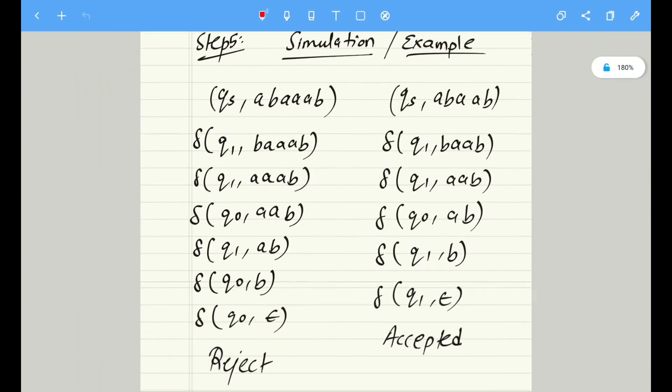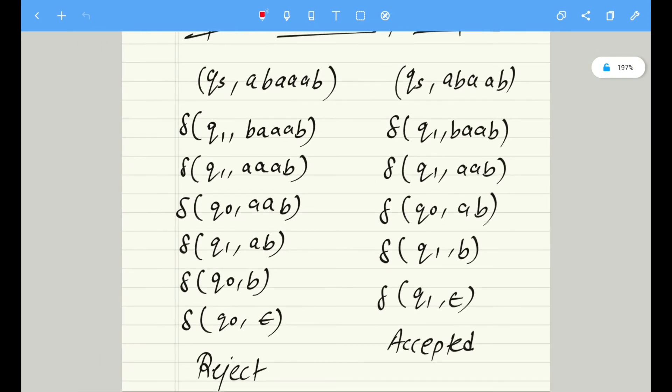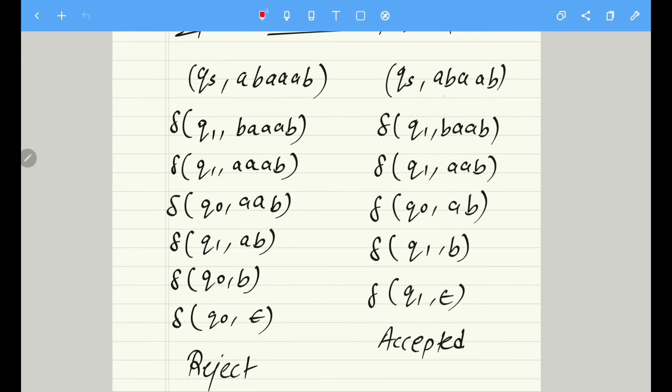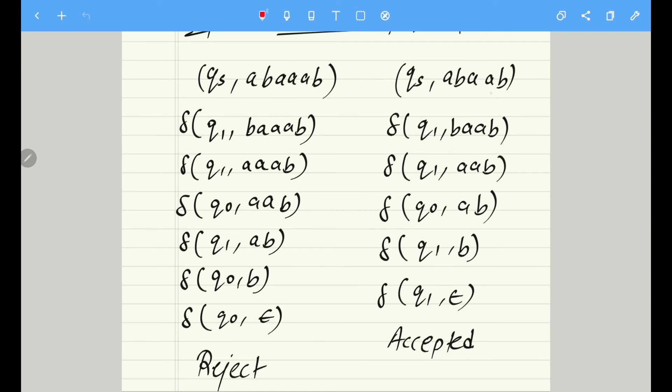Last step is simulation. Let's have a look at the example. I have taken on the left-hand side an example which is having even number of a's, so I know it is going to be rejected. On the right-hand side, I have taken a problem with odd number of a's, so it's going to be accepted.